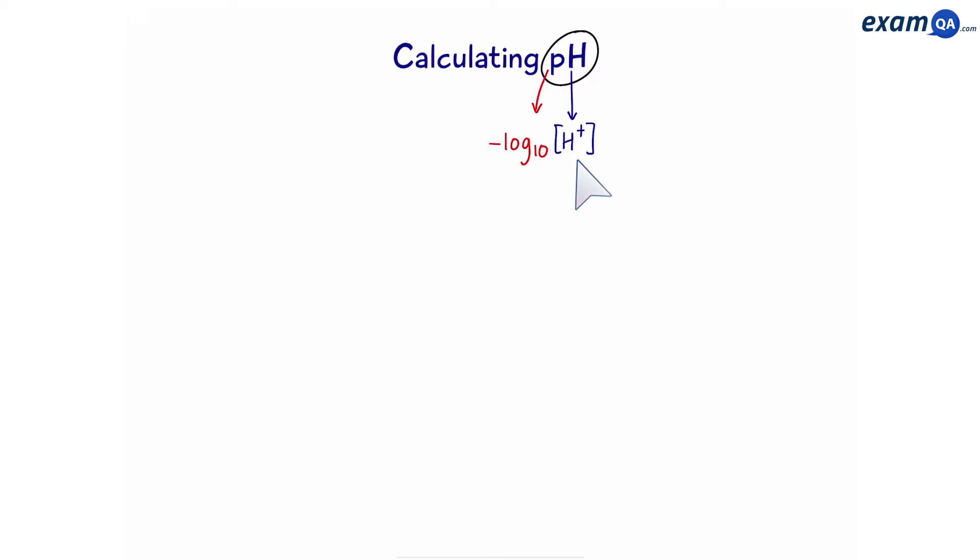So when you're working out pH, you're just measuring the concentration of hydrogen ions in the solution. So why do we have to use pH? Why can't we just express it directly?